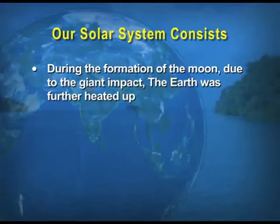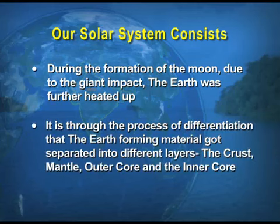With the passage of time, the Earth cooled further, solidified, and condensed into a smaller size. This led to the development of the outer surface in the form of the crust, and later on the outer spheres started to cool down while the interior ones are still hot and gaseous. During the formation of the Moon due to the giant impact, the Earth was further heated up. It is through the process of differentiation that Earth-forming materials got separated into different layers: the crust, mantle, outer core and the inner core.